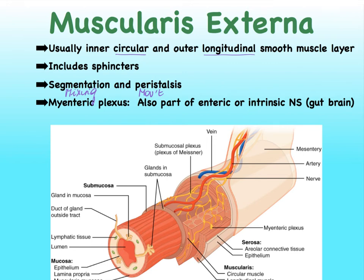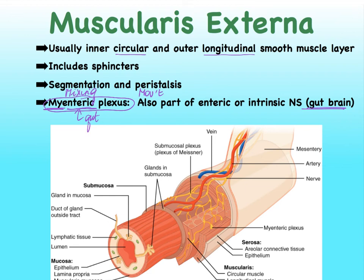We have another nerve plexus here in the muscularis externa called the myenteric plexus — literally myo (muscle) plus enteric (gut). This is once again part of our gut brain, or intrinsic nervous system. The myenteric plexus is shown here with yellowish fibers. To clarify: the submucosal plexus is within the submucosa, while the myenteric plexus is limited to the muscle layer, hence the term myo.